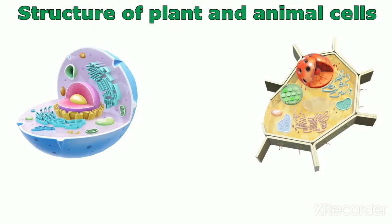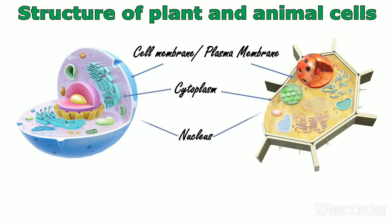Structure of plant and animal cells. The activity of life processes take place in the cell. A typical cell consists of three parts: cell membrane, cytoplasm, and nucleus.